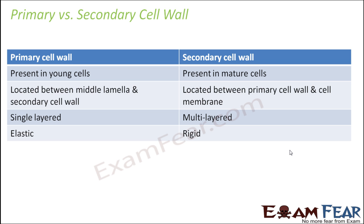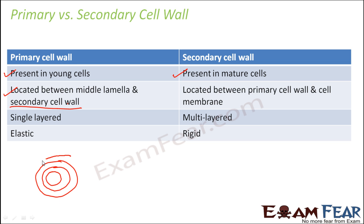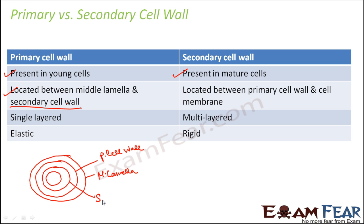Now let us look at the differences between the primary and secondary cell wall. Primary cell wall is present in young cells, while secondary cell wall is present only in matured cells. In terms of location: the middle lamella is the outermost layer, inside that is the primary cell wall, inside that is the secondary cell wall, and inside that is the plasma membrane. So primary cell wall is located between the middle lamella and the secondary cell wall.